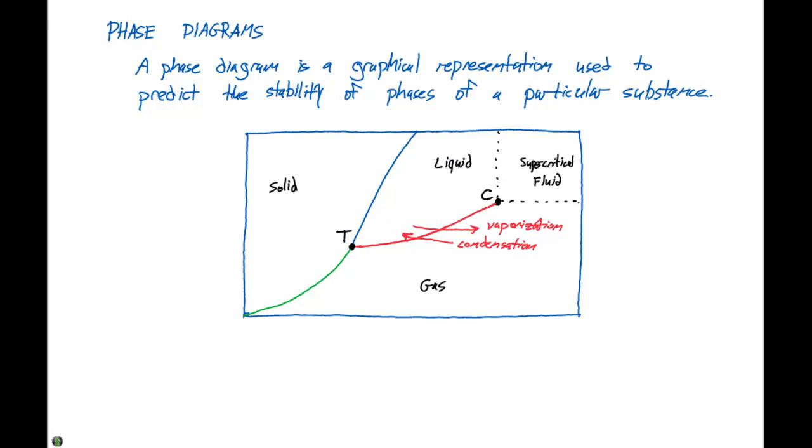The point on this curve where the vapor pressure is one atmosphere is our normal boiling point of the substance. This vapor pressure curve terminates at a point labeled C on the graph, which is called the critical point.